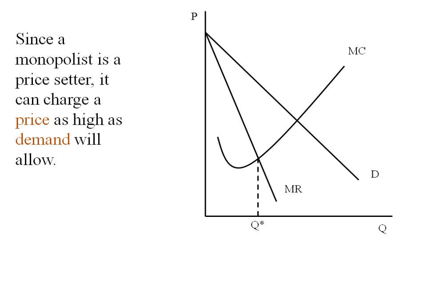So at Q star we go up to the demand curve and over, and that becomes P star.